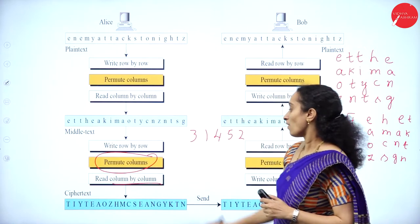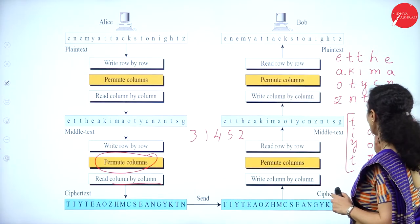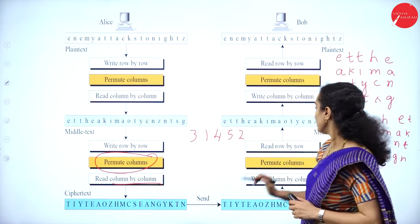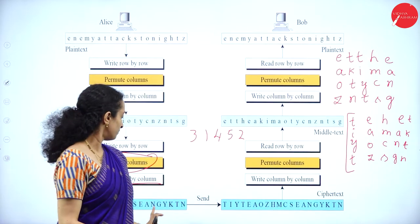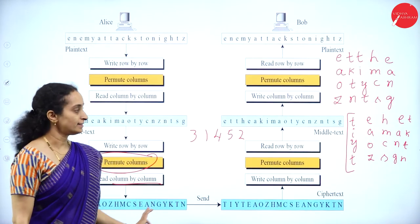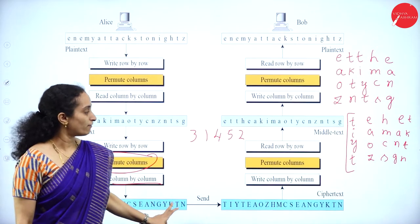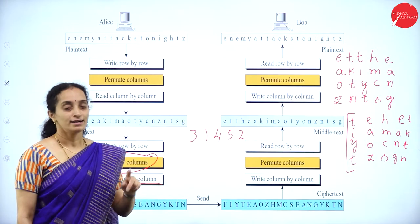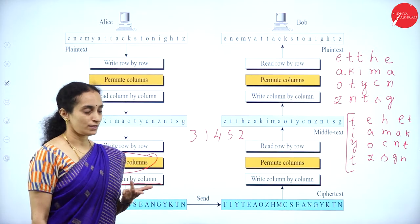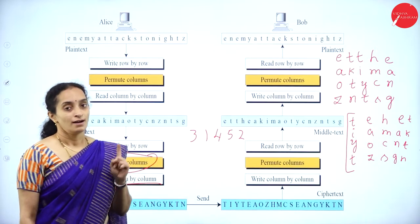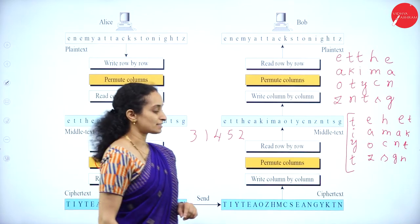Now it is read column by column to produce the final ciphertext: T-I-Y-T, E-A-O-Z, H-M-C-S, E-A-N-G, Y-K-T-N. The algorithm has been executed twice to avoid the pattern attack on the ciphertext.